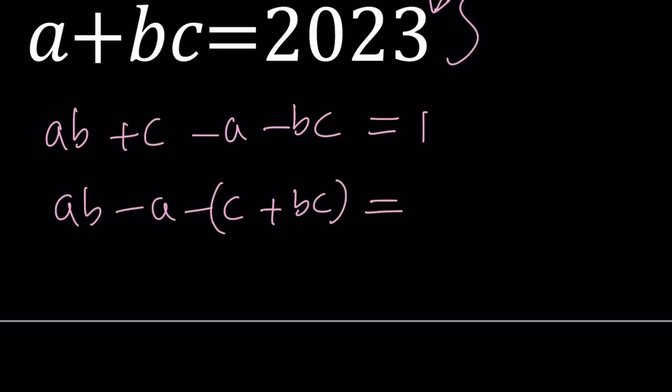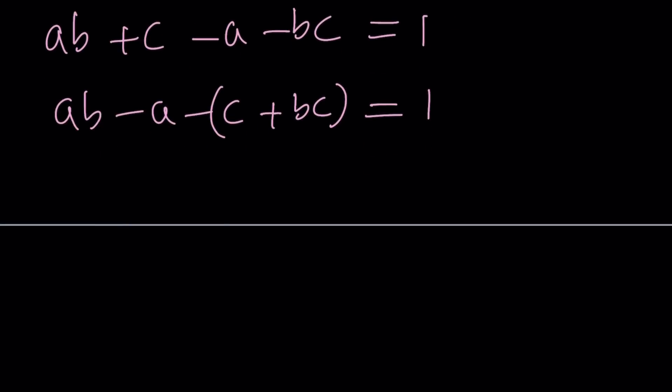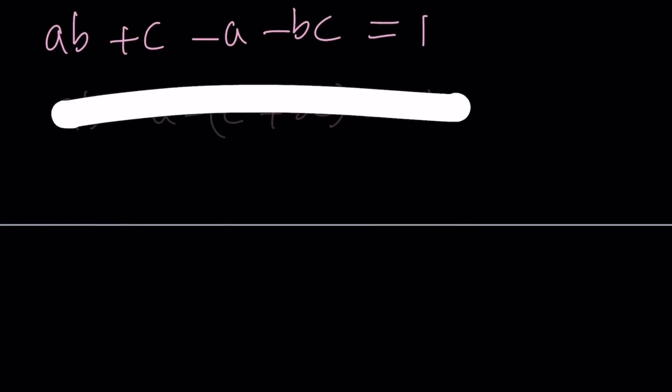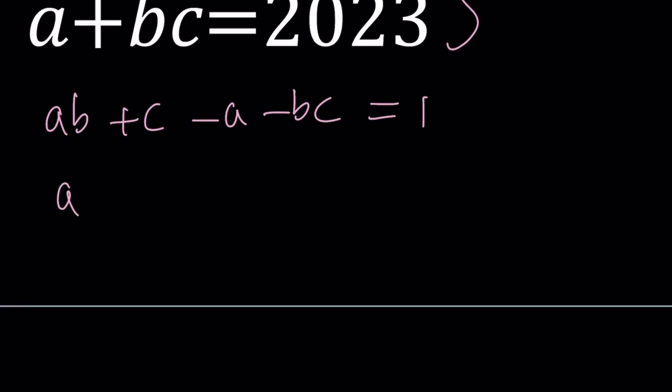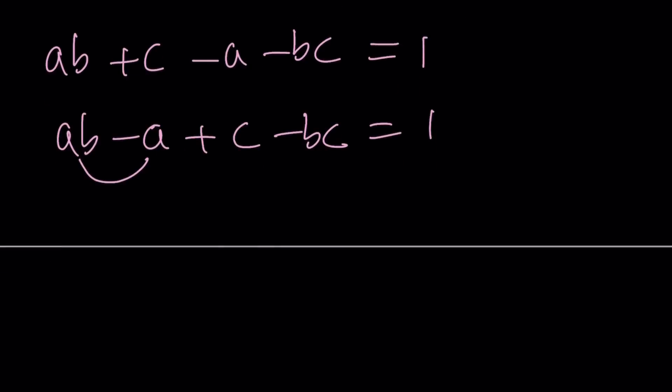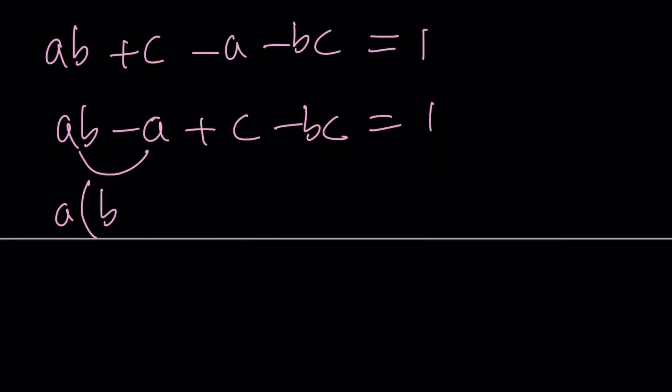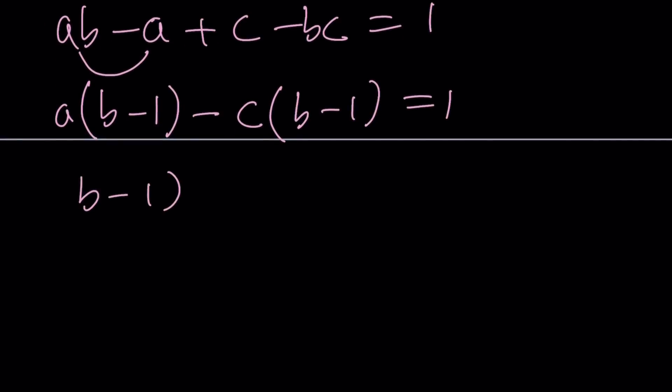I'm going to write it as AB minus A plus C minus BC. We're going to go ahead and do the following. Take out an A. That's going to give me B minus 1. And then take out a negative C. That's going to give me B minus 1 again. So, now we have a common factor. We can go ahead and take out B minus 1. And that's going to give us A minus C equals 1.